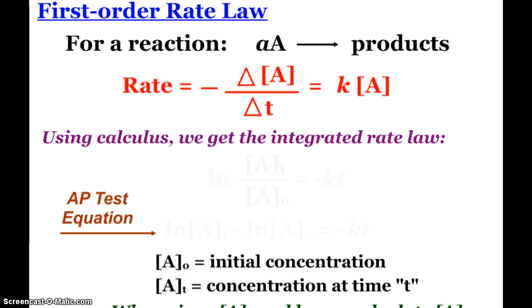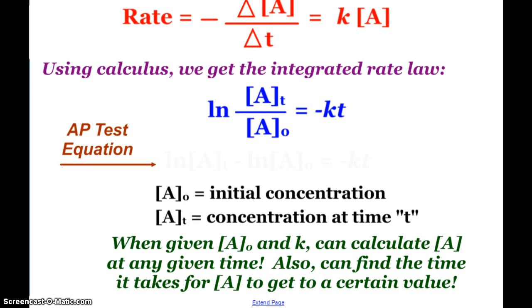So first up, we'll focus on the first order rate law. So here we have a reaction, and what we know so far is that the change in the concentration of my reactant over the change in time is the rate for any reaction. So first order, I'll get k times the concentration of A. Calculus will give us the integrated rate law of being the natural log of A sub t, that's the concentration of my reactant at time t, divided by the initial concentration A sub 0, and that's going to equal negative kt. So now we have time in our equation. On the AP formula sheet, they write it as this, which is the same thing: ln[A]t minus ln[A]0 equals my negative kt.